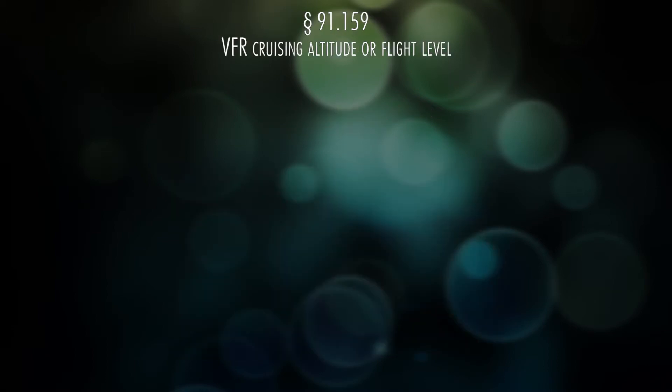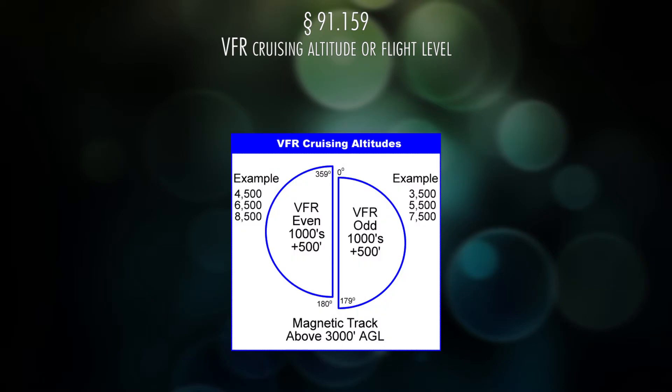VFR cruising altitude: if you are in cruise going east — between 0 degrees and 179 degrees on a magnetic course, not heading — you need to be at odd thousand feet plus 500, so like 3,500, 5,500, 7,500, etc. If you're going west, from 180 to 359 degrees, you need to be at even thousand plus 500, so 4,500, 6,500, etc. These altitudes apply when you're 3,000 feet or more AGL.